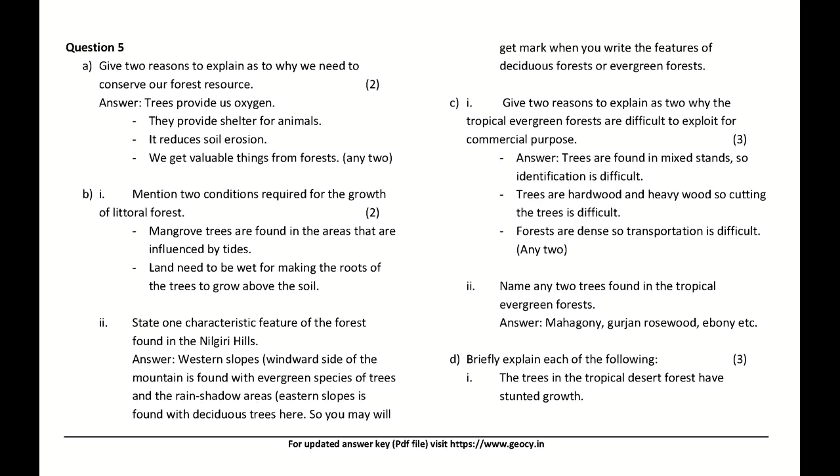Name any two trees found in the tropical evergreen forests. Answer: Mahogany, Gurjan, Rosewood, Ebony, etc.